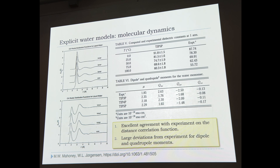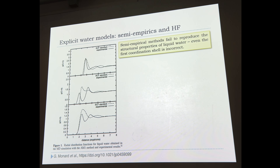But looking more closely, even the dipoles and quadrupoles are completely wrong. These are experimental values for the dipole and quadrupole moment of a water monomer — and this is what the TIP models produce — not even close. Bulk properties have been reproduced at the expense of individual molecular properties. This is simply because a bunch of point charges at a distance is not a good approximation. You can introduce polarizabilities into the system and it improves.